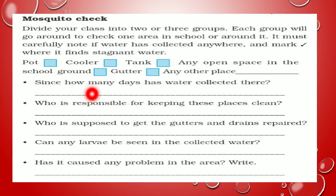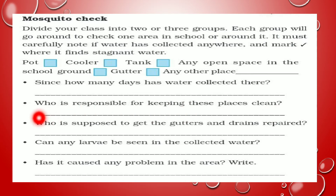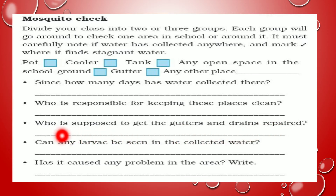Questions for the survey: since how many days has water collected there — एक हफ्ता है या एक हफ्ते से ज़्यादा? Who is responsible for keeping these places clean? इन places को clean करने की responsibility किसकी है — school की, city की, या gram panchayat की? Who is supposed to get the gutters and drains repaired? Can any larva be seen in the collected water? क्या इस इकट्ठे हुए पानी में कोई larva दिखाई दिया? Has it caused any problem in the area? तो इसके बारे में आपने खुद survey करके answers लिखने हैं.